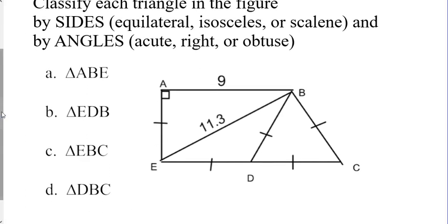So, triangle ABE - you might want to use a colored pencil or just your finger to trace this, but where is ABE? ABE is A-B-E. We notice there's a 90-degree angle in that, so that makes it a right triangle.